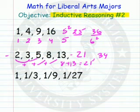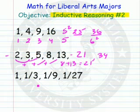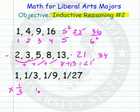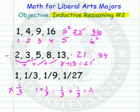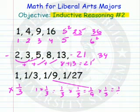The third example has fractions. I know that bothers a lot of people, but they're just numbers. What's happening is you're multiplying each time by 1/3. 1 times 1/3 equals 1/3. 1/3 times 1/3 equals 1/9. And 1/9 times 1/3 equals 1/27. So it is one of those ones where you're just multiplying.